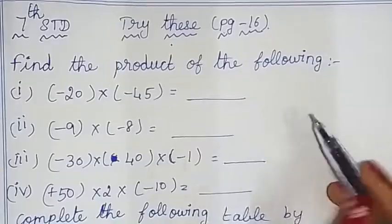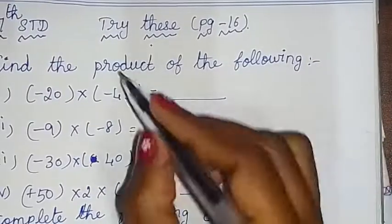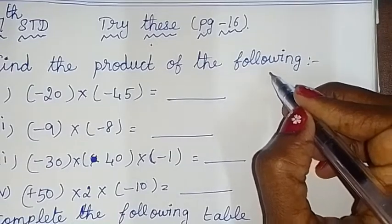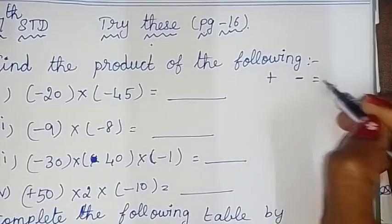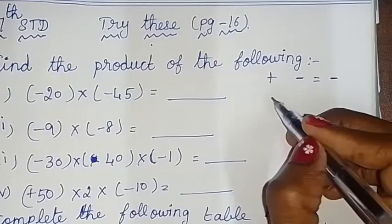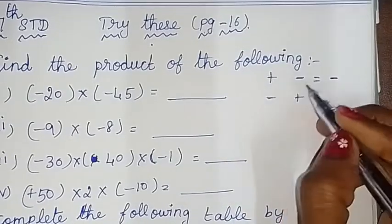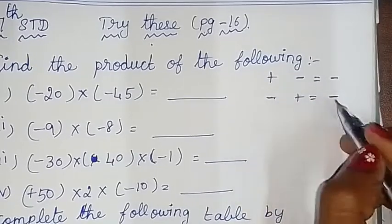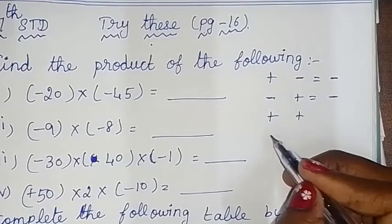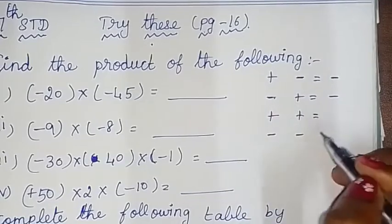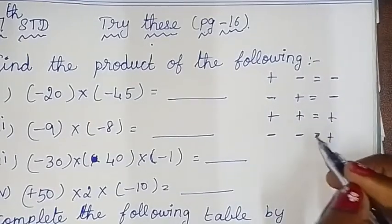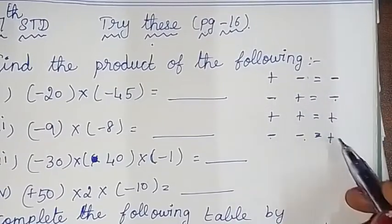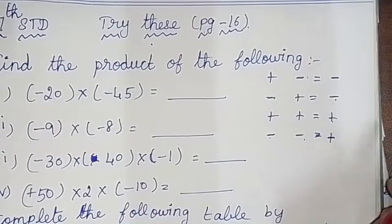There are rules of integer multiplication. So, integer multiplication is here. If there are two symbols, the answer is minus. So, minus plus sub d. So, numbers two multiply. The symbol is minus. So, the answer is plus. So, the answer is minus. The answer is plus.